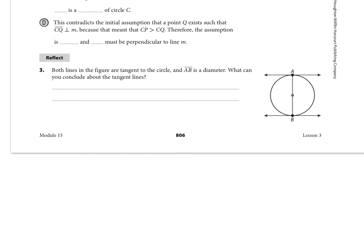It says both lines in the figure are tangent to the circle and AB is a diameter, so we know from that theorem that we have angle A and angle B here that are 90 degrees. What are we going to conclude about the tangent lines themselves? So see if you can figure that out.